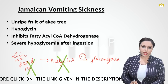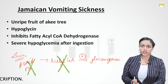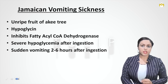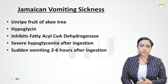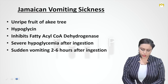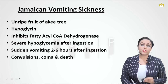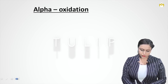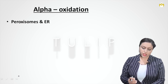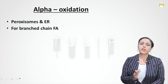So hypoglycemia will occur in these patients. Severe hypoglycemia occurs, sudden vomiting occurs within two to six hours after taking this fruit, and it can be so severe that convulsions, coma, and death can also occur. Now let's see the detail of alpha oxidation — alpha oxidation occurs in peroxisomes and endoplasmic reticulum.